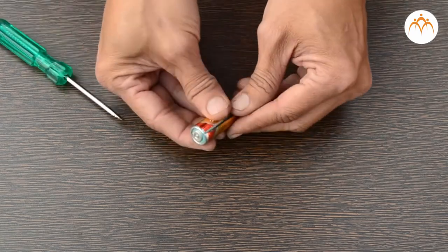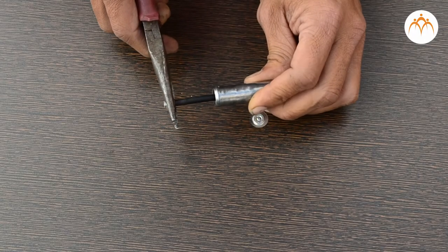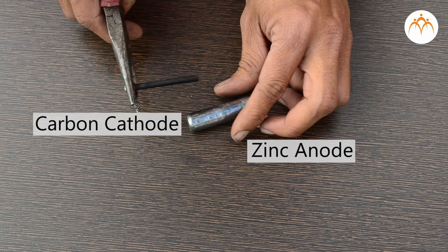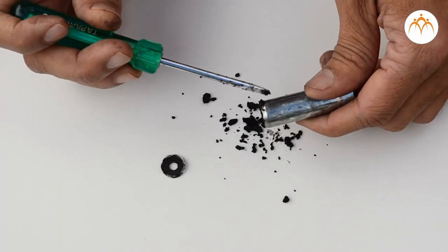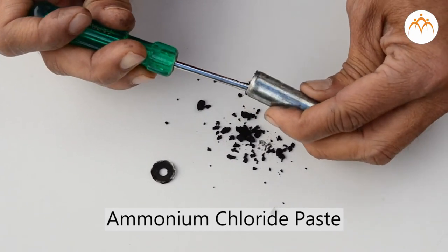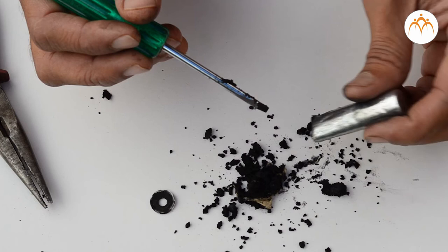AA battery comprises a zinc anode usually in the form of a cylindrical pot with a carbon cathode in the form of a central rod. The electrolyte is ammonium chloride in the form of paste next to the zinc anode. AA battery uses a paste electrolyte with only enough moisture to allow current to flow.